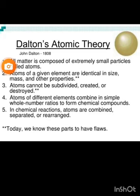John Dalton in 1808 presented this model with a few key points: all matter is composed of extremely small particles called atoms; atoms of a given element are identical in size, mass, and other properties; atoms cannot be subdivided, created, or destroyed; atoms of different elements combine in simple whole-number ratios to form chemical compounds; and in chemical reactions, atoms are combined, separated, or rearranged.